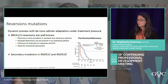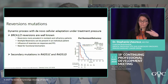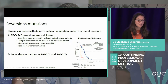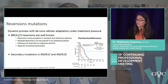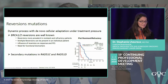A well-described resistance mechanism is reversion mutation: patients initially have a BRCA mutation, but the tumor changes the mutation back to a functional state. This is a dynamic process — archival tissue is no longer sufficient since the cell changes under treatment. We therefore need tissue at the time of recurrence to assess the current mutation status.